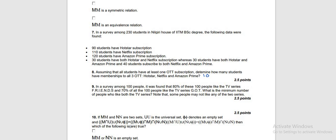Moving on to the next question. Question number 8 says that in a survey among 100 people, it was found that 80% of these people like the TV series Friends and 70% of all people like the TV series GOT. What is the minimum number of people who like both TV series? Note that some people may not like either of the two series.